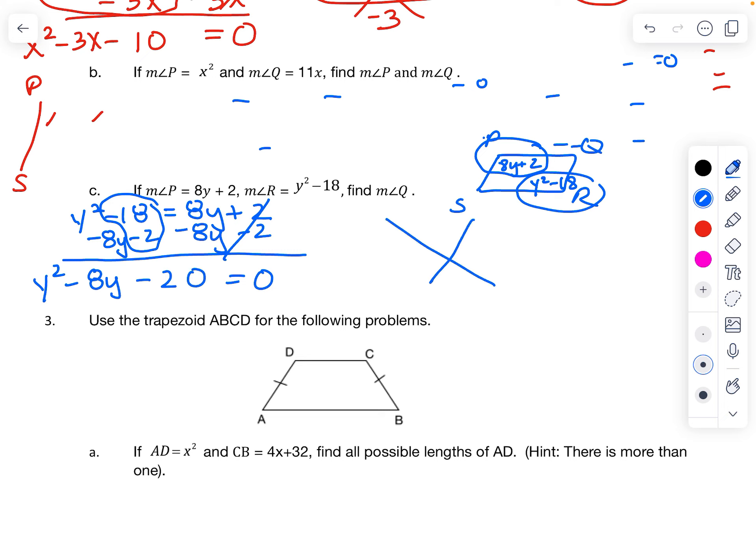So again, need two numbers that multiply to negative 20 but add up to negative 8. The only numbers that work are going to be negative 10 and positive 2. So my factored form is y minus 10, y plus 2 equals 0. Solve for each y. There's my two y's.